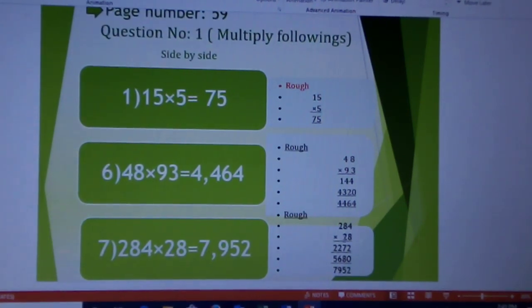Now 2 multiply 2 = 4 and 4 plus carry 1 = 5. 5 in the thousands place. Now if you add it, it will be done.